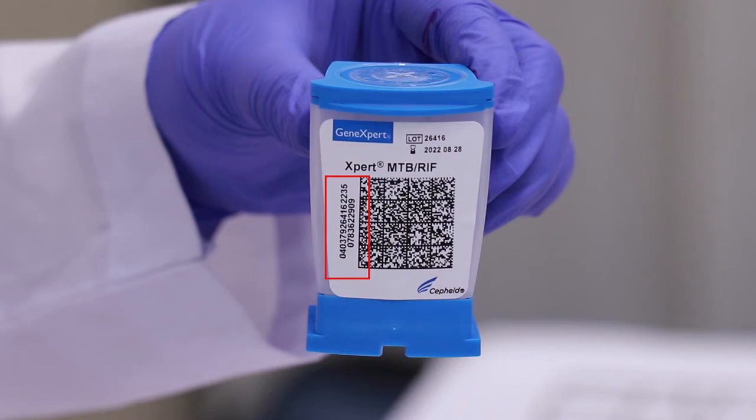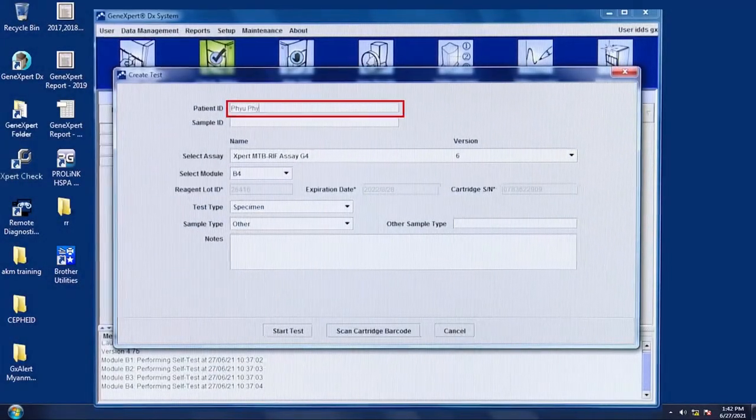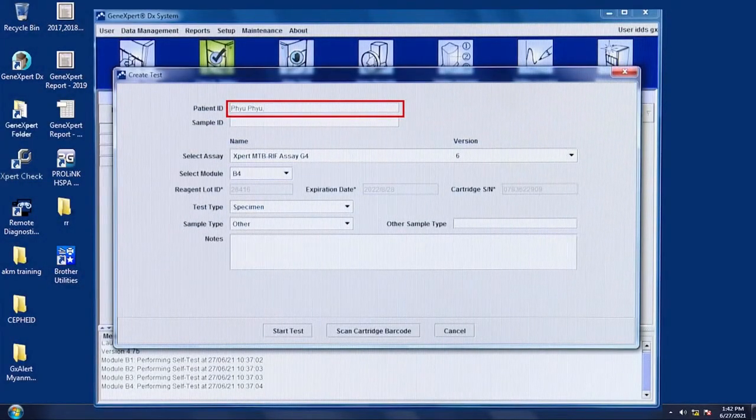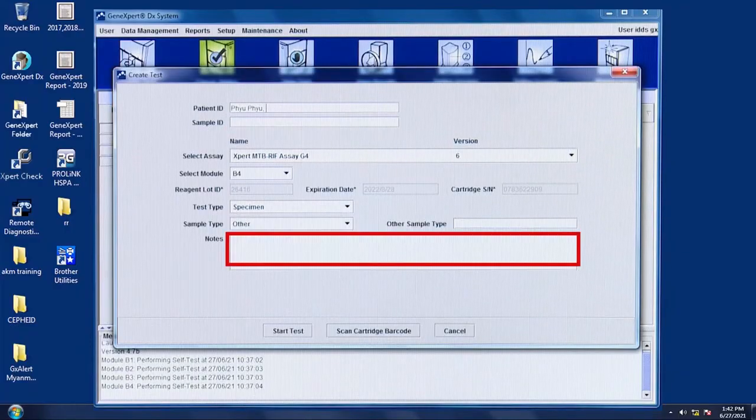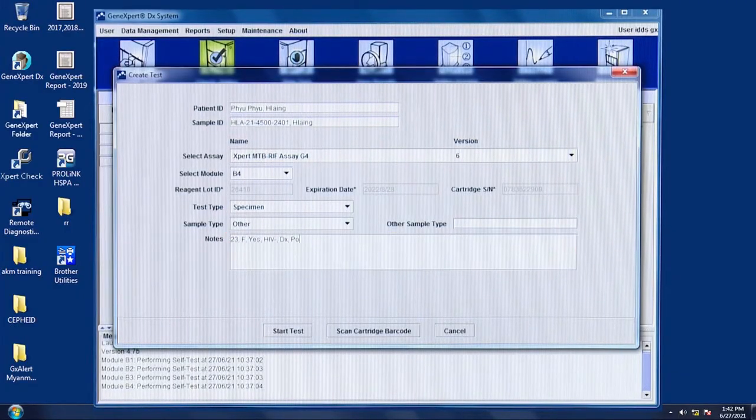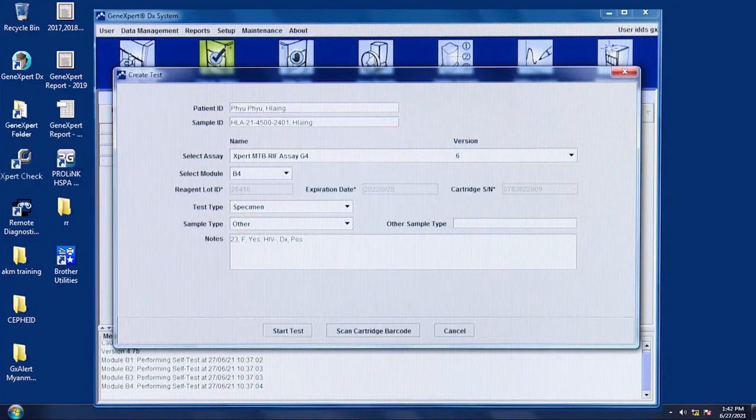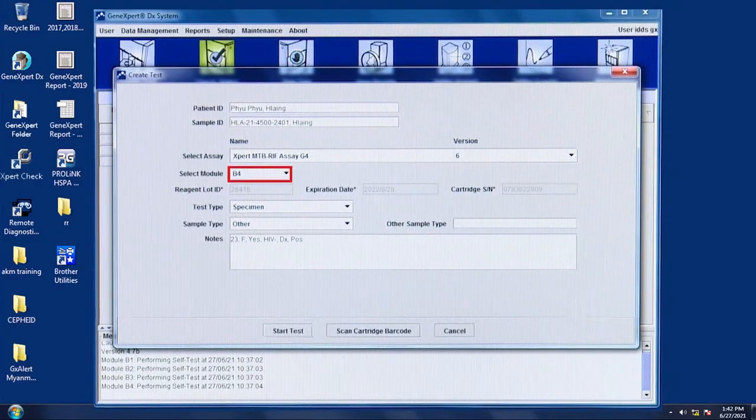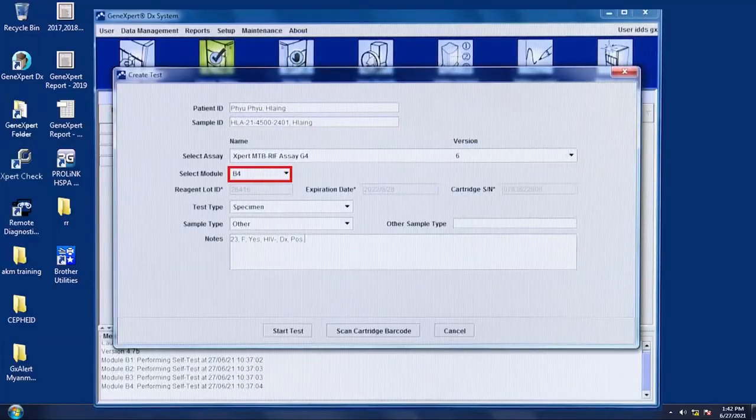Then, Create Test window with data entry form appears. The software automatically fills the boxes for the following fields: Select Assay, Reagent Lot ID, Cartridge SN, and Expiration Date using the barcode information.